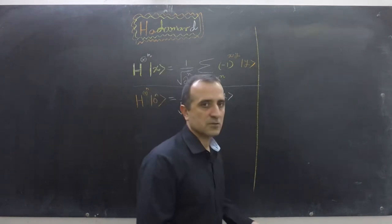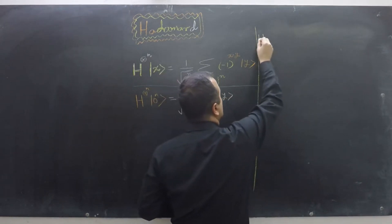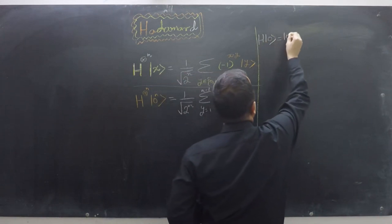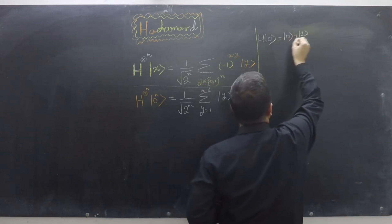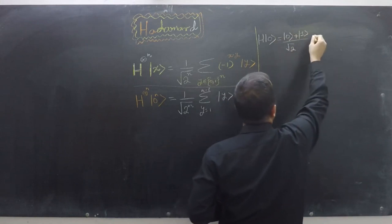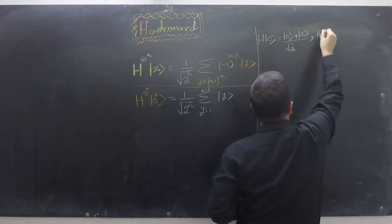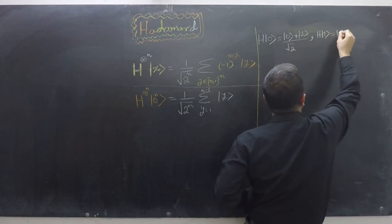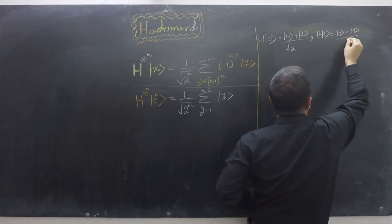Let's start from this part of the board. We know that when we apply the Hadamard gate on |0⟩, the answer is |0⟩ plus |1⟩ divided by square root of 2. In contrast, if we apply the Hadamard gate on |1⟩, the answer is |0⟩ minus |1⟩ divided by square root of 2.